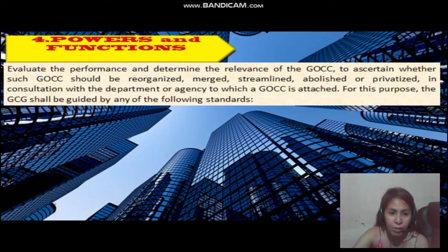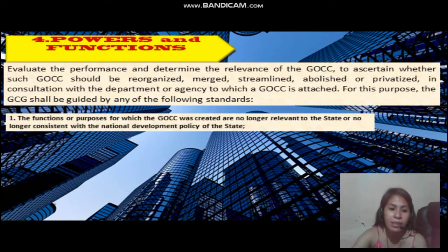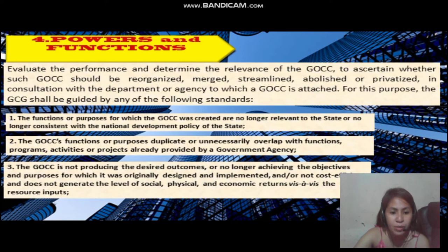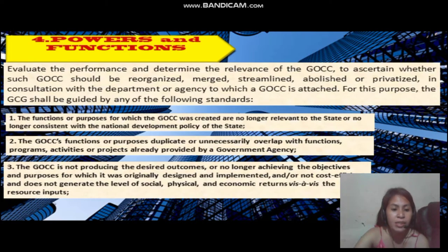The fourth subtopic is the powers and functions. The first is: the functions or purposes for which the GOCC was created are no longer relevant to the State or no longer consistent with the national development policy of the State. The second is: the GOCC's functions or purposes duplicate or unnecessarily overlap with functions, programs, activities, or projects already provided by government agencies. The third is: not producing the desired outcomes or no longer achieving the objectives and purposes for which it was originally designed, and is not cost efficient and does not generate the level of social, physical, and economic returns vis-à-vis the resource inputs.